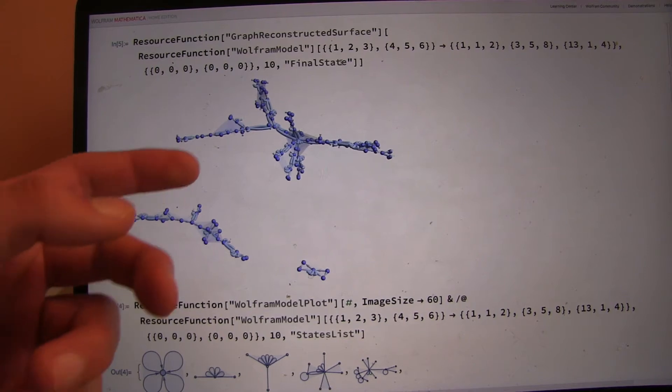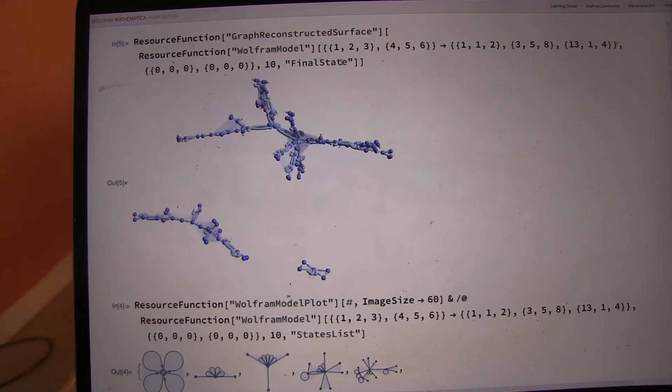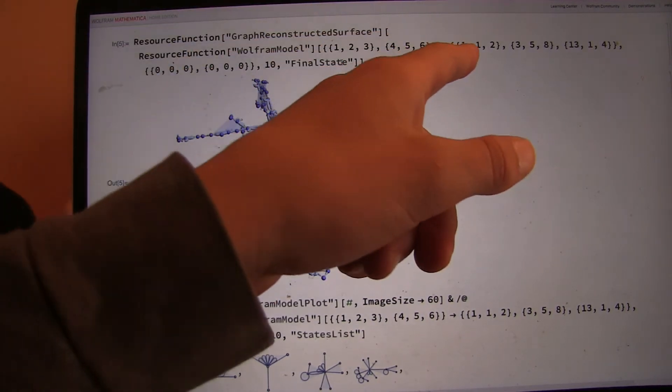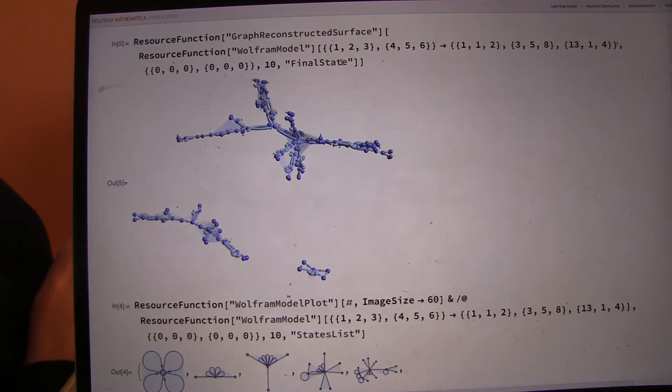So it's right up here. You start with one, two, three, four, five, six. And then you go to one, one, two, three, five, eight, thirteen, one, four. And this kind of produced these interesting separations.